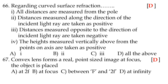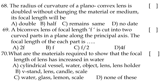Sixty-seventh question: a convex lens forms a real, point-sized image at focus when the object is placed at infinity. Sixty-eighth question: the radius of curvature of a plano-convex lens is doubled without changing material or medium; its focal length will be option A, double. Sixty-ninth question: a biconvex lens of focal length f is cut into two equal parts along the principal axis; the focal length of each part is option B, f.